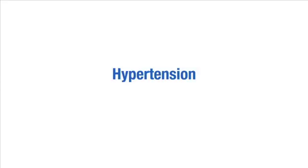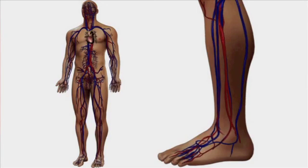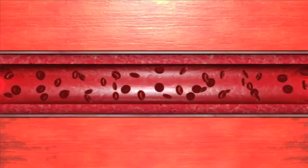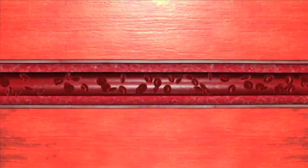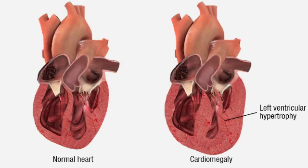Elevation of blood pressure above the normal range is known as hypertension. Blood pressure may be elevated by increasing the circulating blood volume, increasing the cardiac output, or constricting the peripheral vasculature to increase total peripheral resistance.